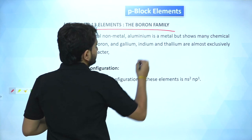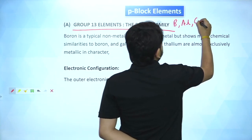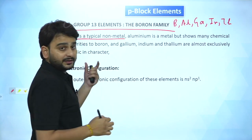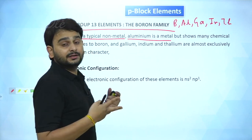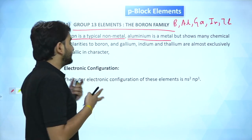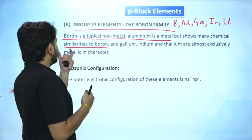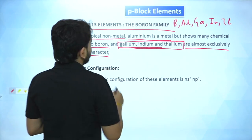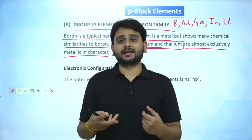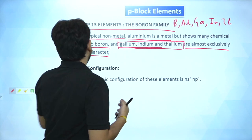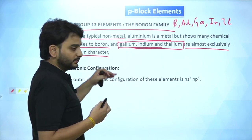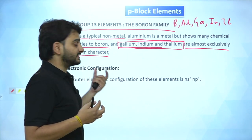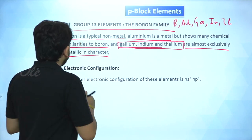Group 13, the boron family, contains boron, aluminium, gallium, indium, and thallium. Boron is a typical non-metal. Aluminium is a metal but shows certain non-metallic tendencies similar to boron. Gallium, indium, and thallium are almost exclusively metallic in character — as expected, metallic character increases as we move down the group.